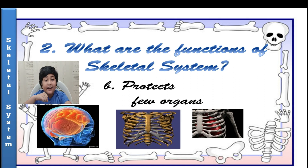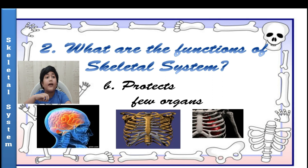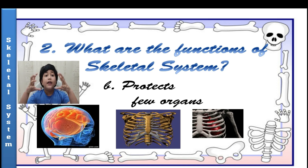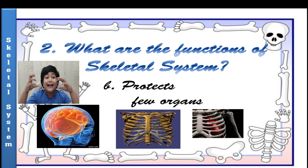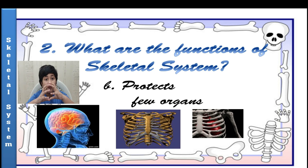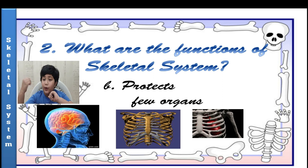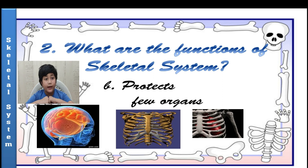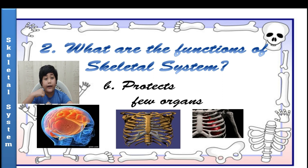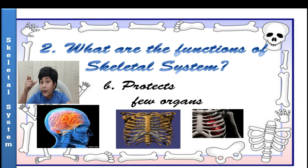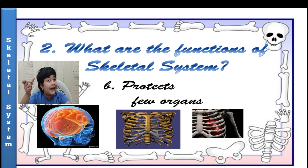the skull protects the main part of our body, that is the brain. Our heart and lungs are the most important organs in our body. Luckily, we have ribs to protect them. Ribs act like a cage of bones around our chest. We have 12 pairs of ribs to protect our heart and lungs. Bones even produce red and white blood cells.